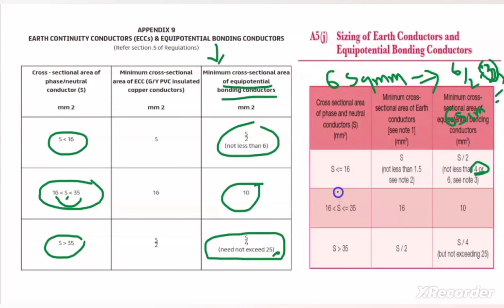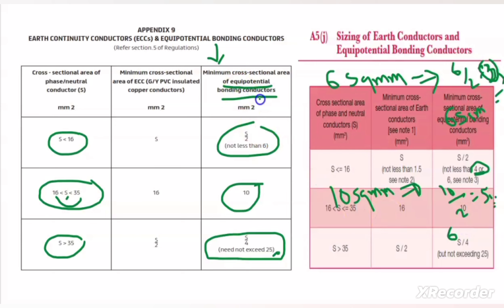Now let us take another example. In this case I have a phase conductor size of 10 mm². Then the equipotential bonding conductor size will be S divided by 2 — 10 divided by 2 — that is 5 mm². As per DIVA regulation, since the calculated value is 5 mm², we have to select the next standard cable size, which is 6 mm². But in Abu Dhabi, we also select 6 mm² here, because we must go to the next higher standard size above the calculated value, or if the calculated value is already a standard cable size, we select that size. Now let us take the example where the phase conductor is 16 mm²: the equipotential bonding conductor will be 16 divided by 2, which is 8 mm². Since 8 mm² is not a standard cable size, we go for the next standard size — 10 mm².